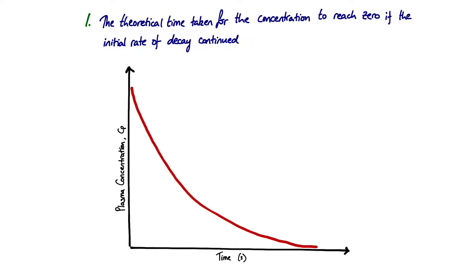We'll take each of those definitions in turn. The first one: the time constant is the theoretical time taken for the concentration to reach zero if the initial rate of decay continued. What does that mean? If we go to our plasma concentration against time graph, our initial rate is the rate at this point here at time zero. So our initial rate here is at its steepest. And if that were to continue, it would come down and the point at which the reaction would complete or the concentration would reach zero would be this point, which would define our time constant.